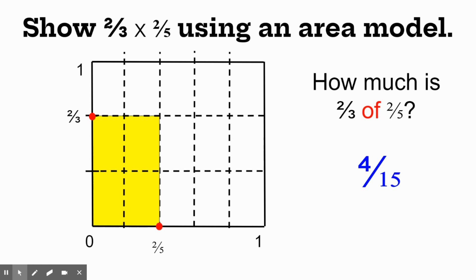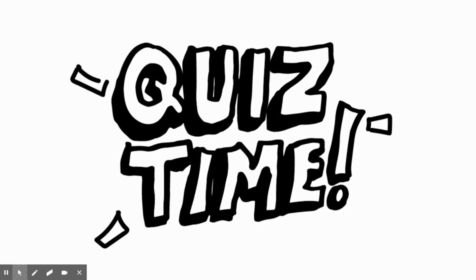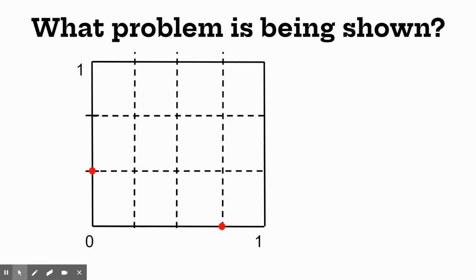You've seen two examples — now it's your turn. I've already got a model drawn for you. I want you to tell me what fraction multiplication problem is being shown by this model. Look at where the red dots are and see if you can name those points. On the top number line, the one going up and down, we have one-third, and on the bottom one we have three-fourths. So the problem being shown is one-third times three-fourths.